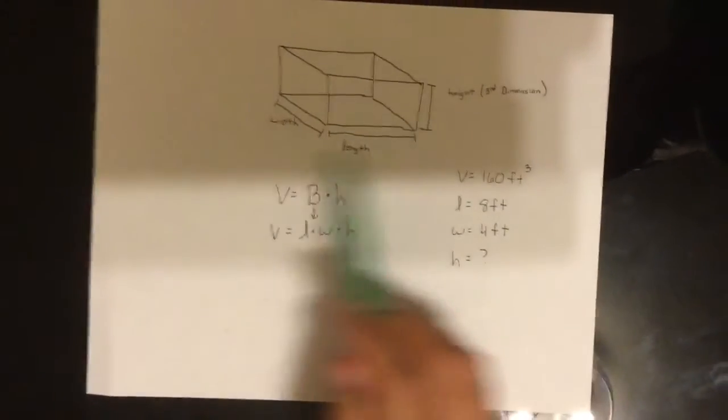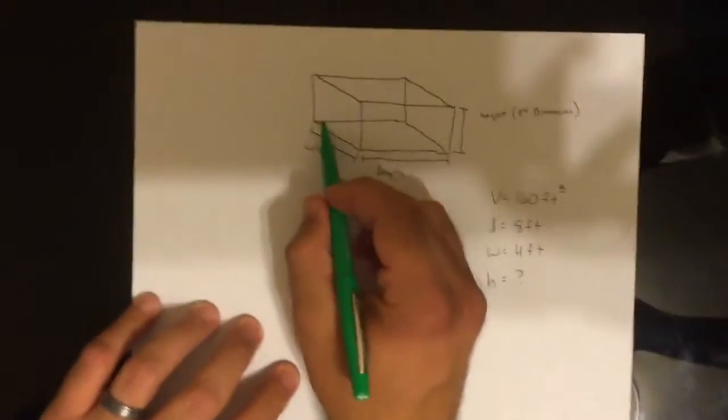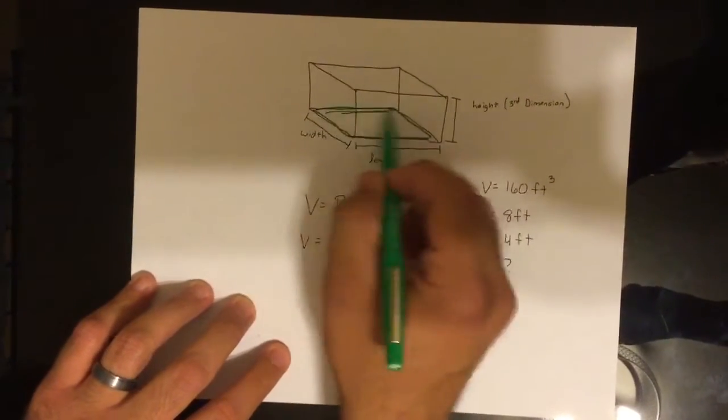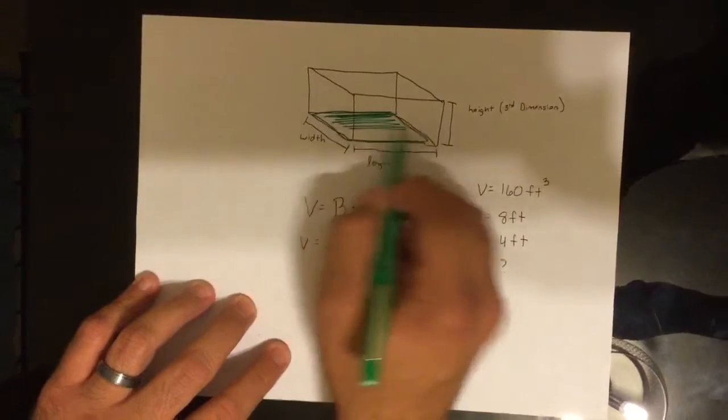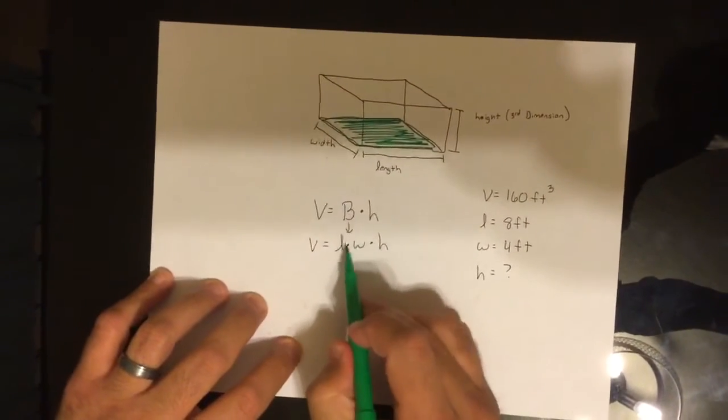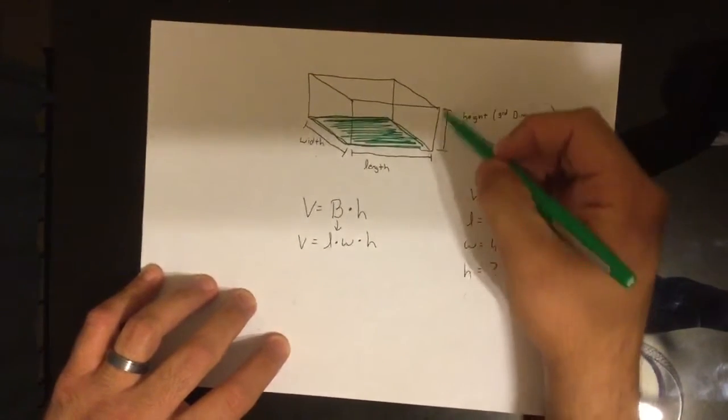So again I drew my picture of my rectangular prism. So again here's my base. I'm going to shade it in. Shading my base is a rectangle. The formula for a rectangle is length times width. We will then multiply that by the third dimension.